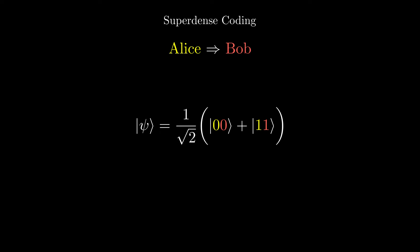Then Alice and Bob take those qubits with them. Now when Alice wants to send two bits of classical information to Bob, depending on which two bits of information Alice wants to send, she performs some operations on her qubit.